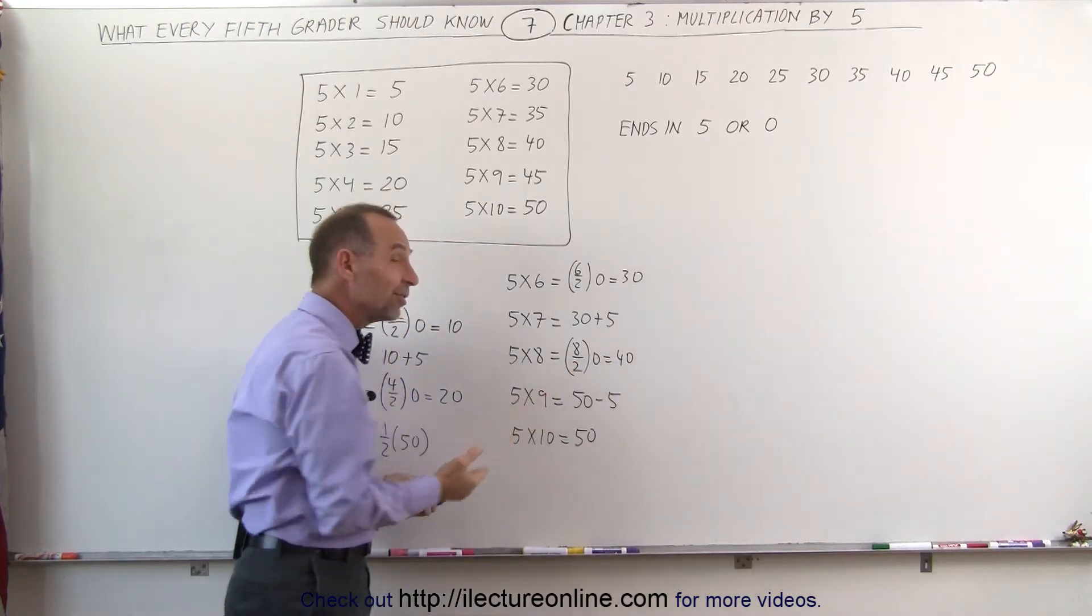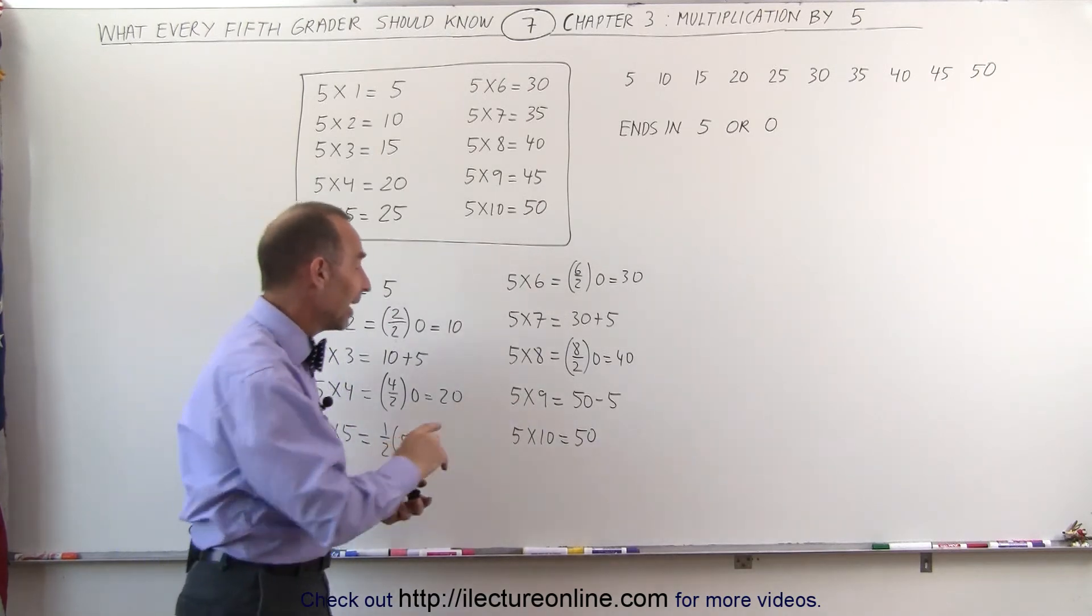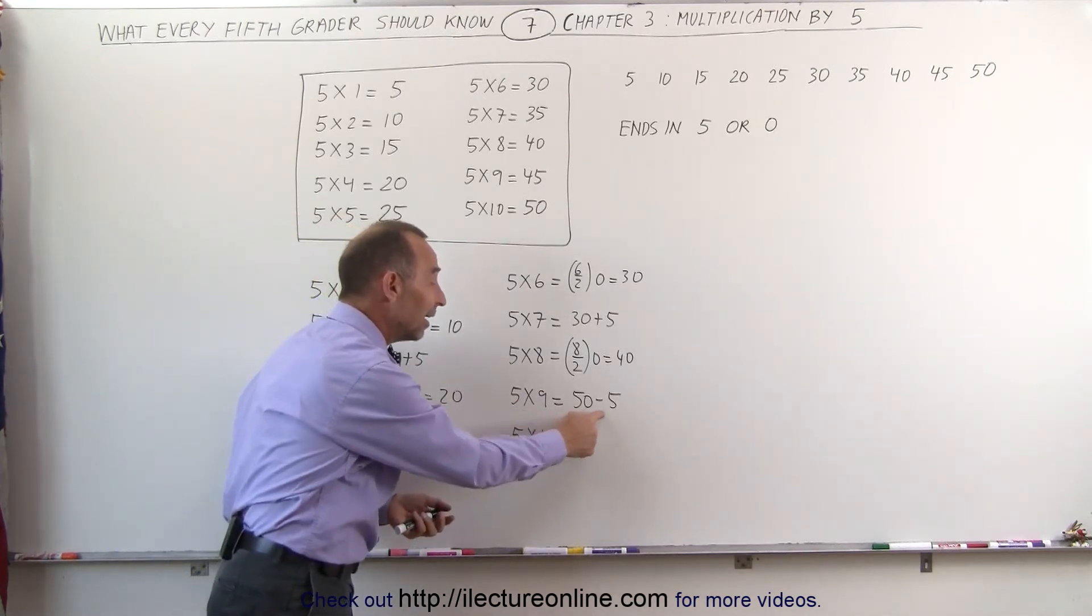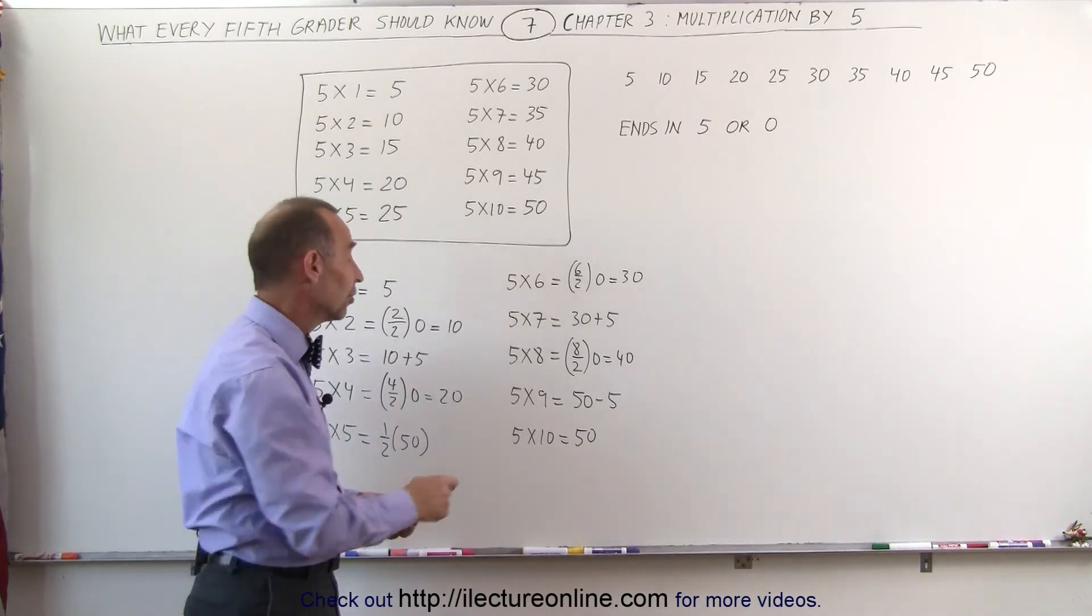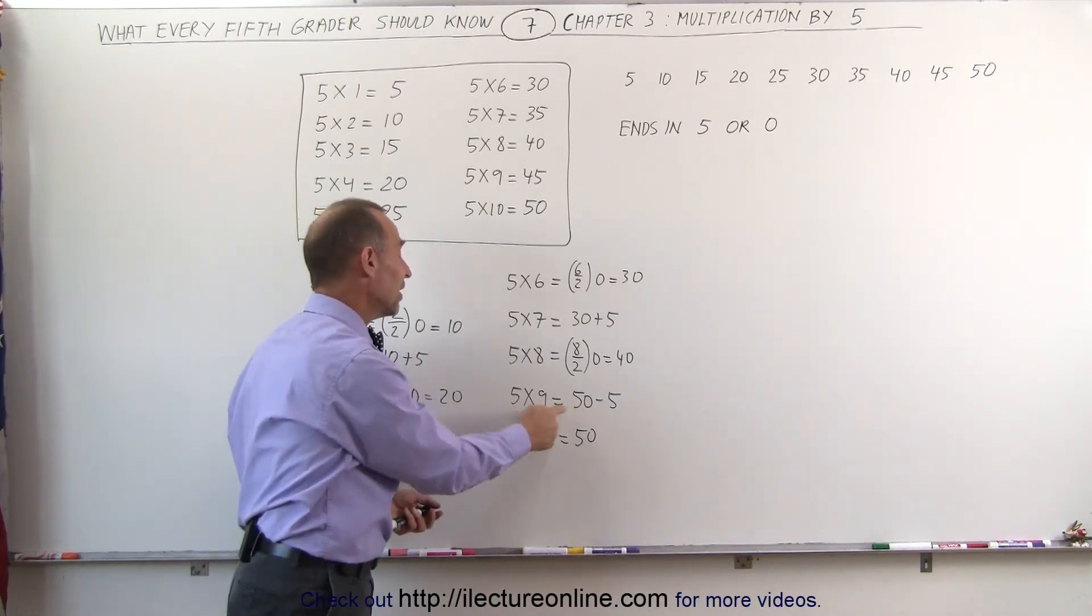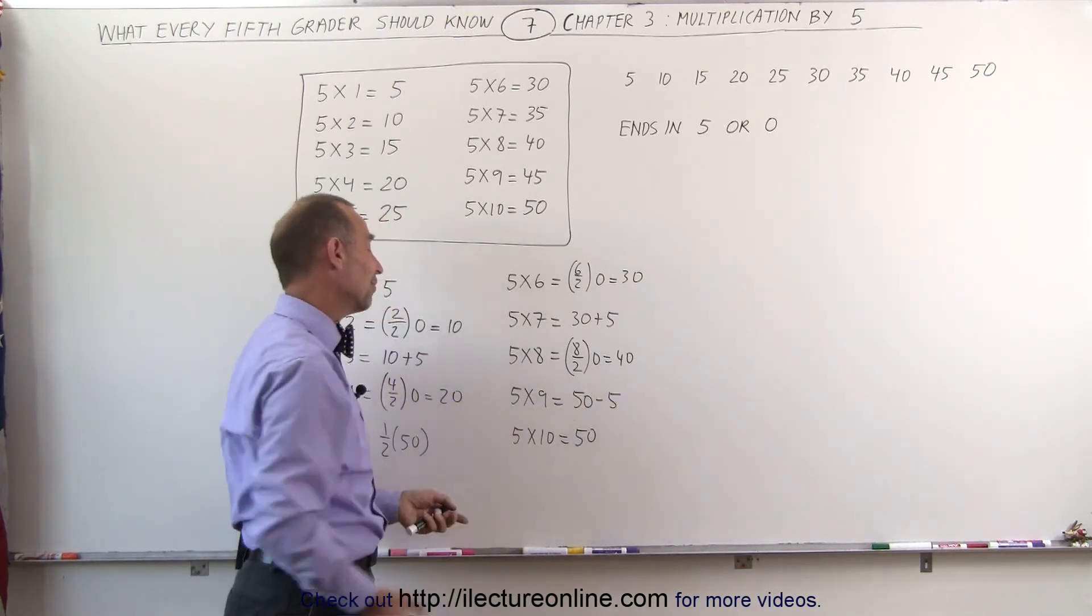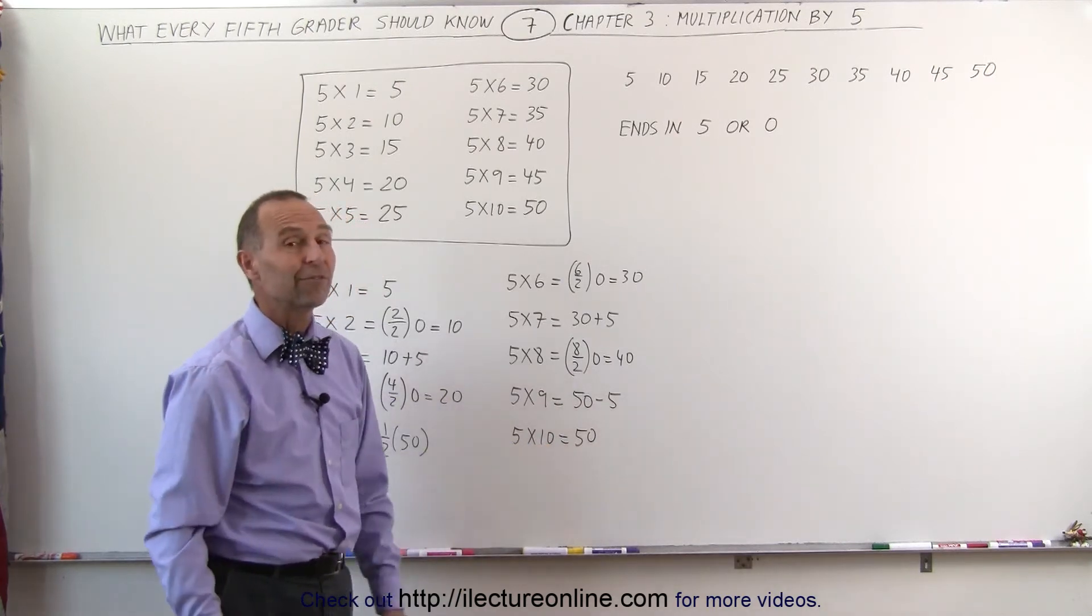5 times 9, I always like multiplication by 9 because I take multiplication times 10 and subtract one of them. So in this case, 5 times 10 is 50, subtract the 5, I get 45. And 5 times 10 is simply 50.